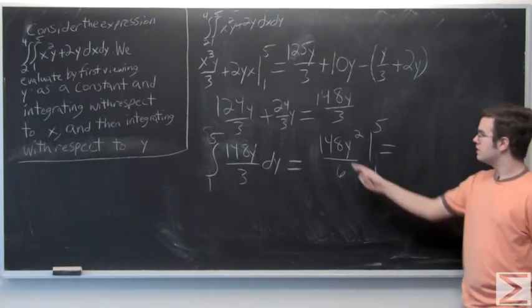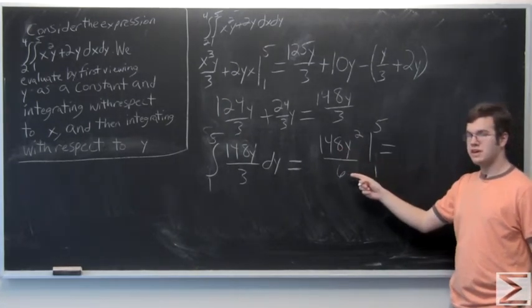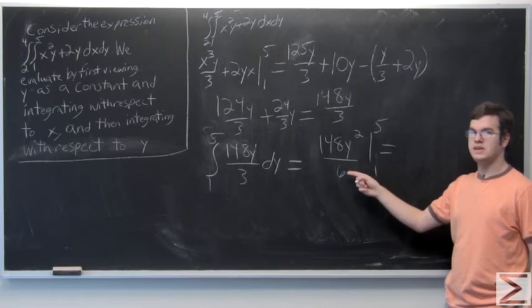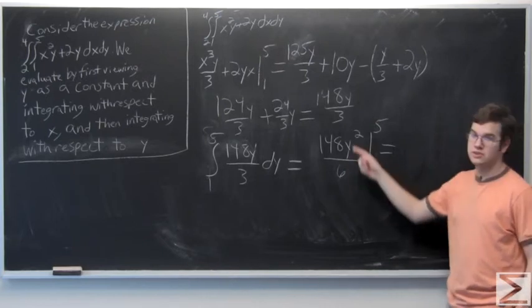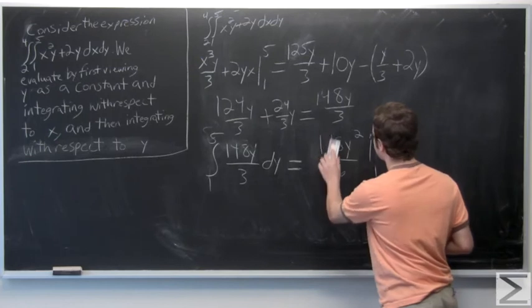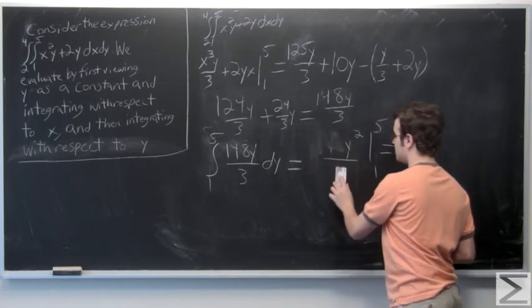Okay, so 148 and 6 both have the number 2 as a common factor, and therefore we could reduce this fraction to make the problem much simpler.